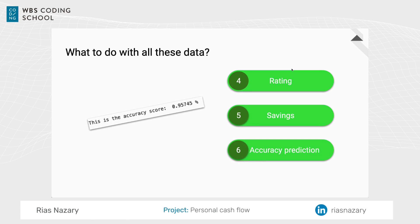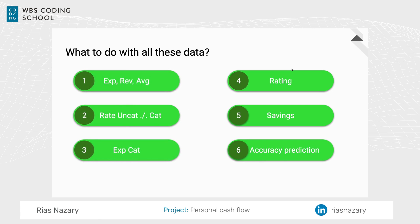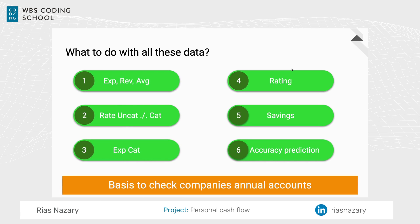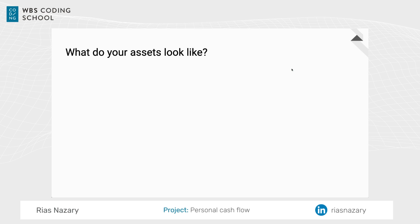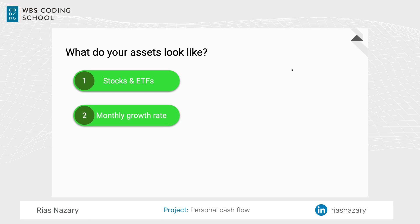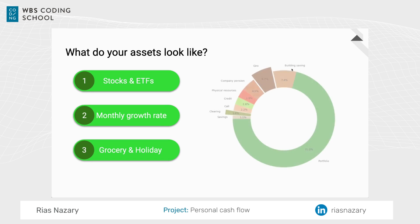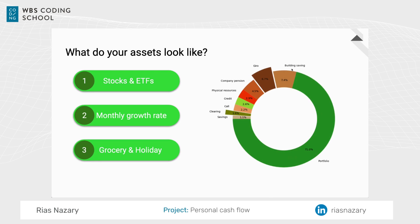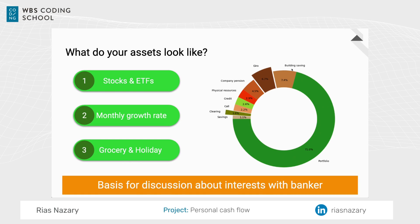We also have a rate of accuracy for how well the machine categorizes transactions. All these KPIs can be used for companies' annual accounts. As a next step, I built an asset overview, since the code can get you current stock information, a function of monthly growth rates for your private pension plan or building savings, and other account balances. In the end, the computer provides charts and tables which can be used for discussions about interest with your banker — for example, when you're about to buy a house or a condo.